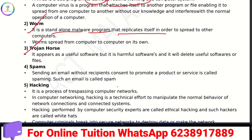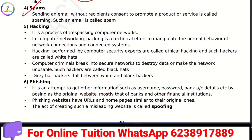A Trojan horse is a type of software that contains inseparable and harmful software, which can delete files from our system. Spam refers to sending unsolicited products or services to recipients without their consent. Hacking is unauthorized access to a computer network without permission.